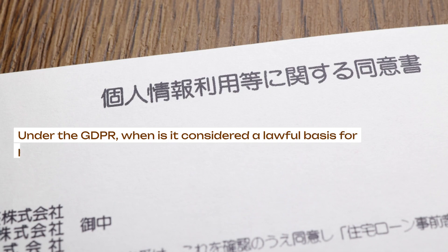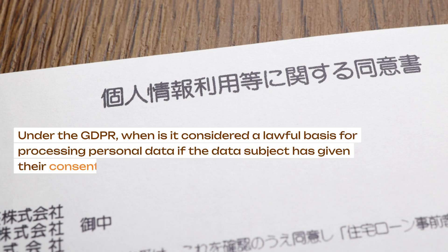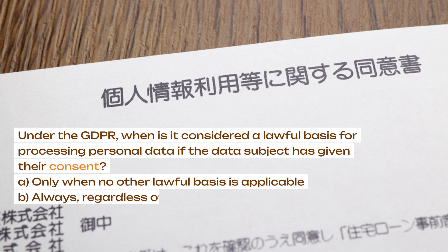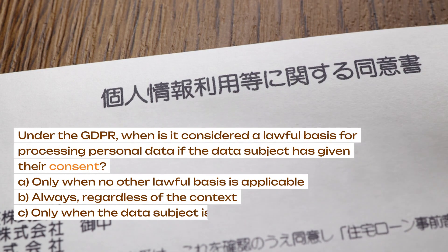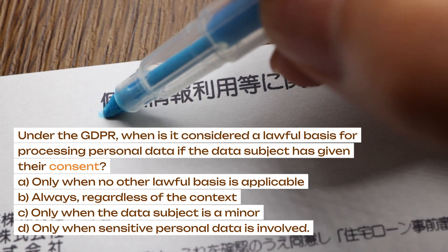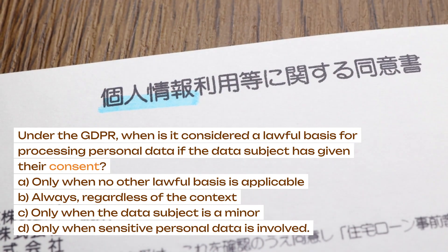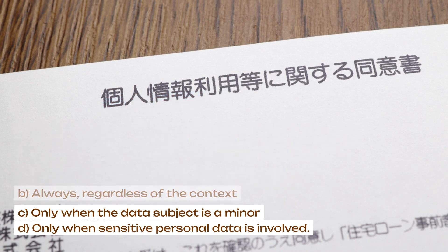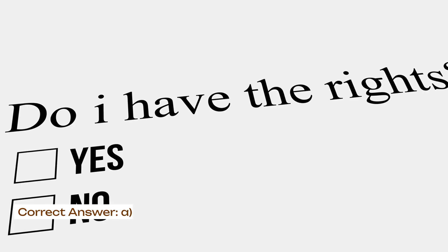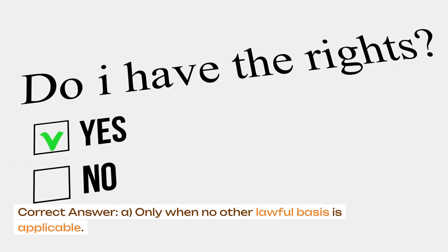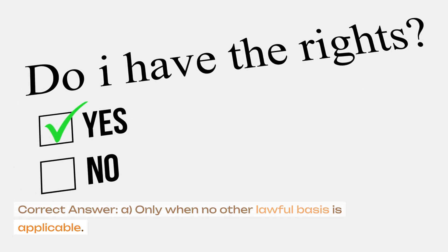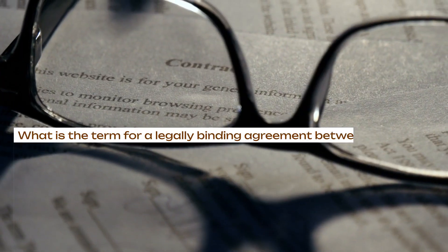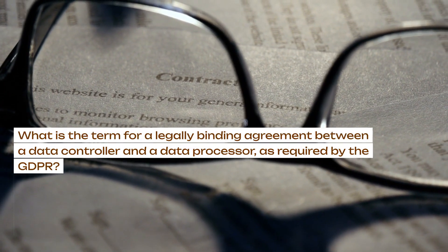Under the GDPR, when is it considered a lawful basis for processing personal data if the data subject has given their consent? A. Only when no other lawful basis is applicable. B. Always, regardless of the context. C. Only when the data subject is a minor. D. Only when sensitive personal data is involved. Correct answer: A. Only when no other lawful basis is applicable.